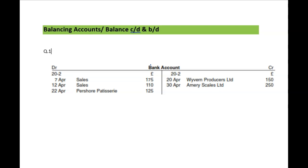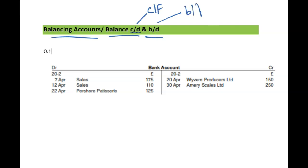I'm going to show you balancing of accounts — how you're going to do balance CD and BD. CD means carried down, BD means brought down. Very often it is known as CF, carried forward, or BF, brought forward.